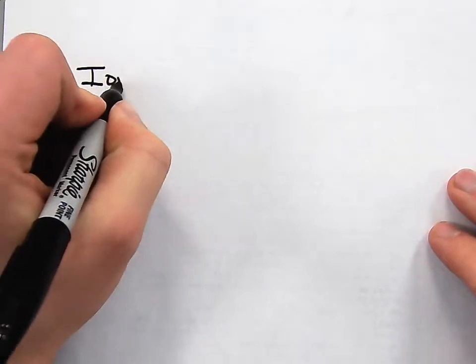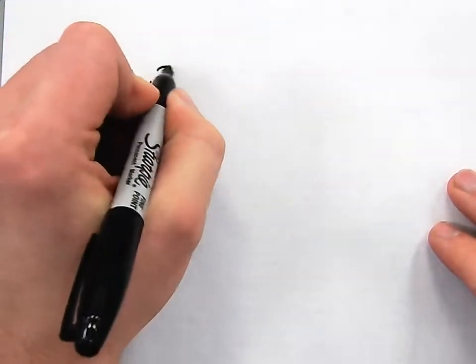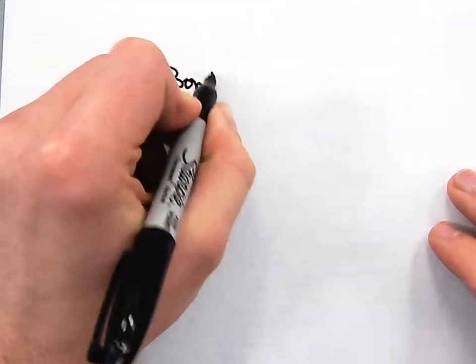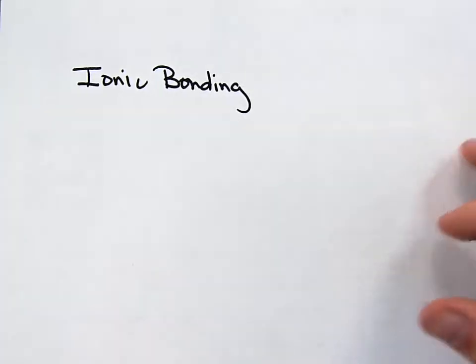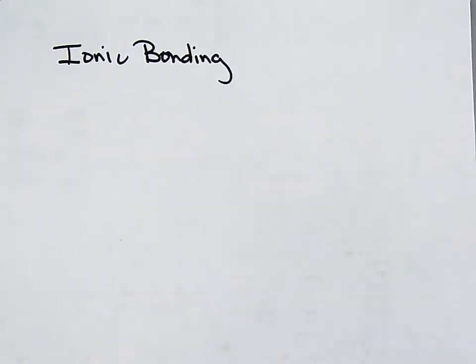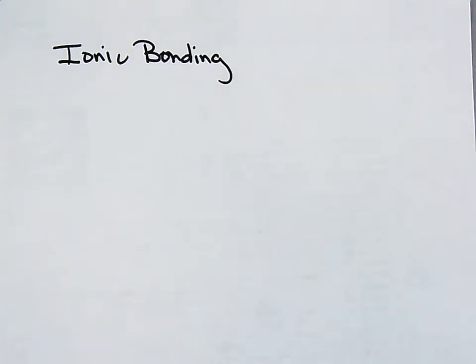We are going to be talking about ionic bonding. This is in chapter 20.2 of the textbook. The text pages are listed up there. And before we talk about ionic bonding, let's just mention the general definition of bonding.